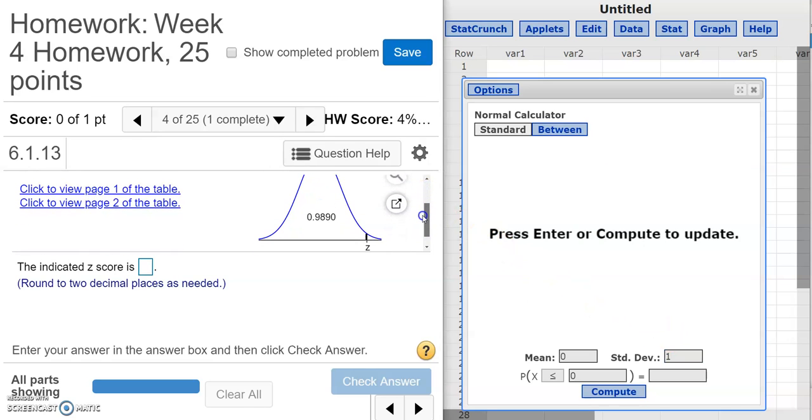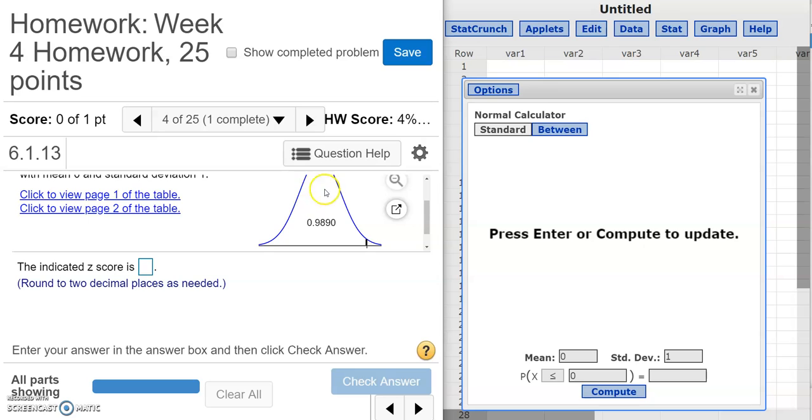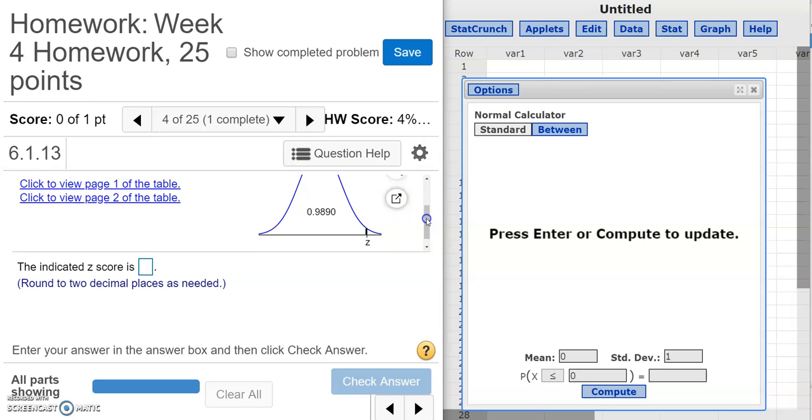Now, there's two parts to the standard distribution or any normal distribution curve. There's the numbers that appear down here at the bottom. In this case, since it's a standard normal distribution, those are going to be our z-scores. If it wasn't a standard normal distribution, it would just be the values of whatever data we had for that particular assignment. And then we're going to have these areas up here, these areas under the curve. Those areas are corresponding to the probabilities that are associated with the values down here of the data on the bottom.